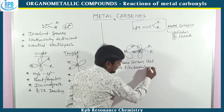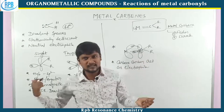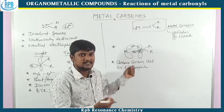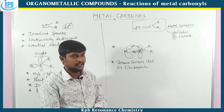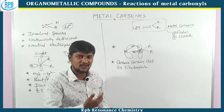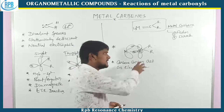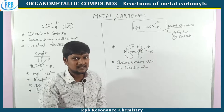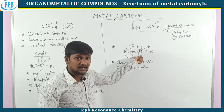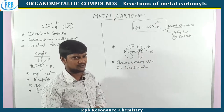Let me repeat: if the carbene is in the singlet state, two electrons are present in the same sp2 hybrid orbital and one vacant p-orbital is present. That vacant p-orbital accepts the electron cloud in the form of backbonding from the metal atom. This system accepts electrons — that is electrophilic nature. So singlet carbene carbon acts as an electrophile.